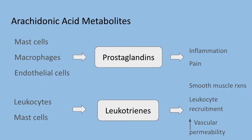Arachidonic acid metabolites are the next set of mediators. Prostaglandins and leukotrienes are lipid mediators produced from arachidonic acid present in membrane phospholipids, and they stimulate vascular and cellular reactions in acute inflammation. Prostaglandins are produced by mast cells, macrophages, endothelial cells, and other cell types, and are involved in vascular and systemic reactions of inflammation. In addition to their local effects, prostaglandins are involved in the pathogenesis of pain and fever in inflammation — just remember the P in prostaglandins is for pain.